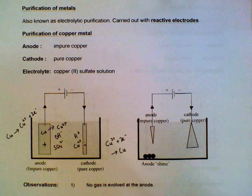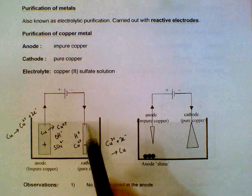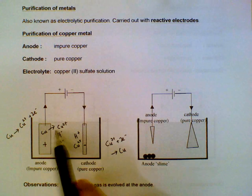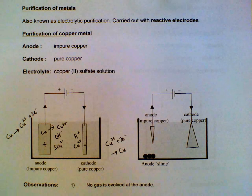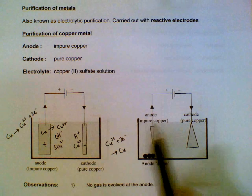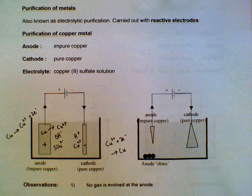So as the process goes on we will have more and more copper deposited here, and then the anode will contribute copper ions into the solution, into the electrolyte. And then we end up with a smaller anode and then a larger cathode.